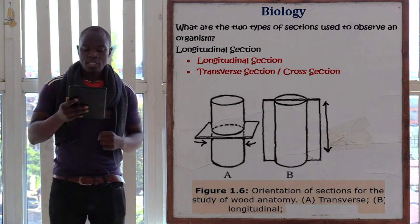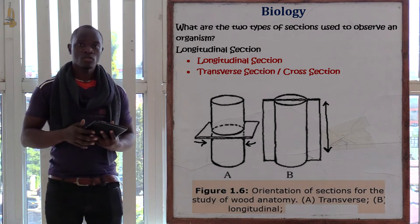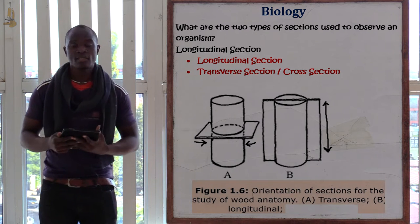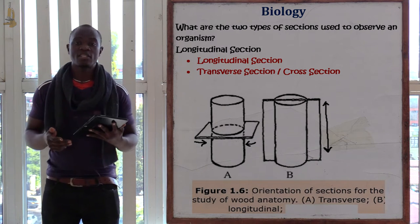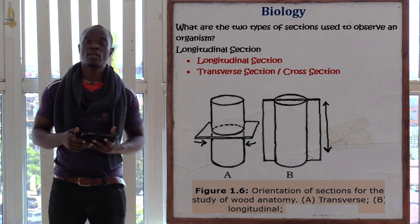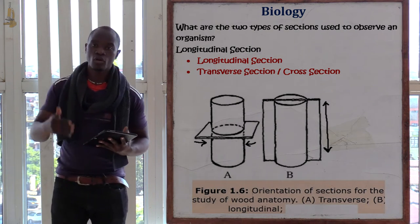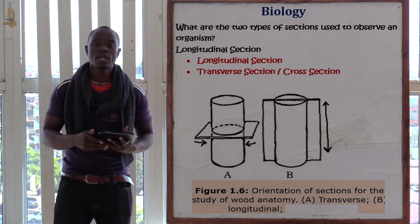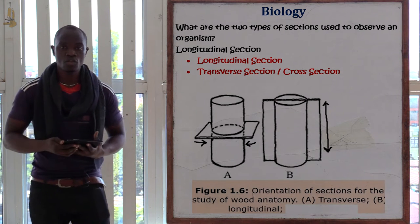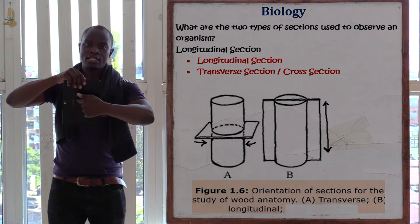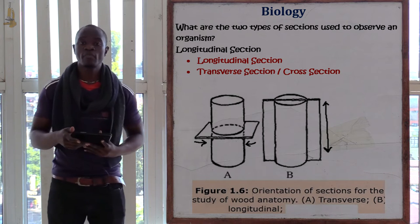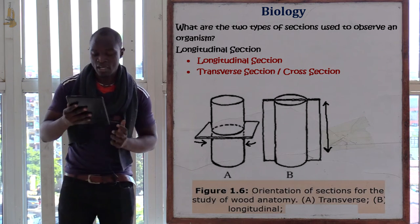The next question asks: what are the two types of sections used to observe an organism? We have the transverse section and the longitudinal section — also called the cross section. For the longitudinal section, you cut the specimen from top to bottom. For the cross section, you cut the specimen across the equator or latitude. Longitudinal: top to bottom; cross section: cut across.